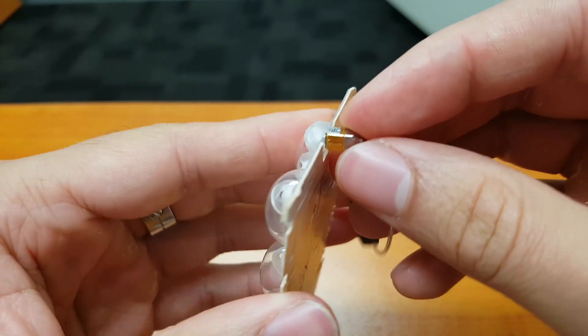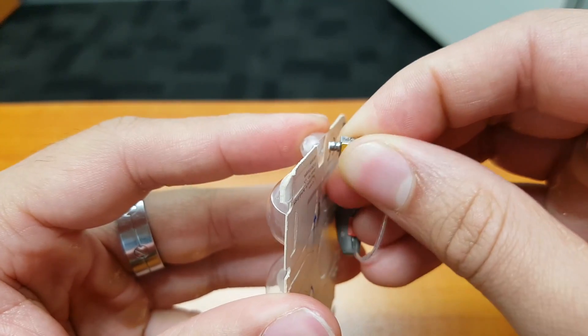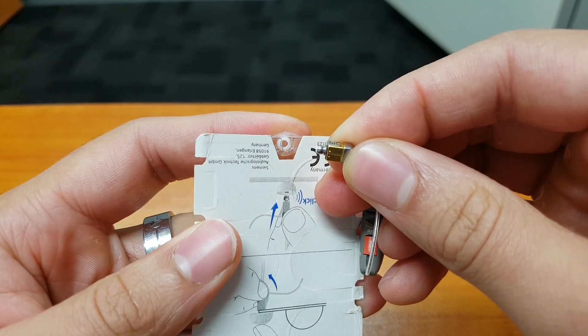Now what we'll need to do is give it a bit of a twist and a pinch, and that will dislodge like so.